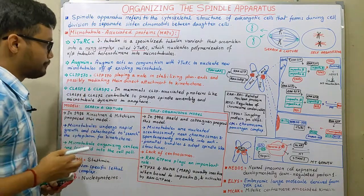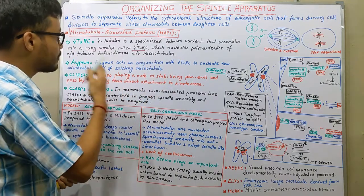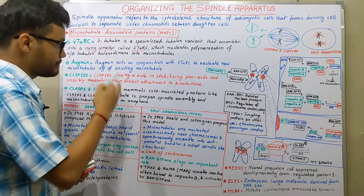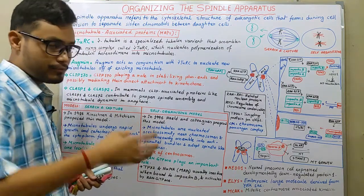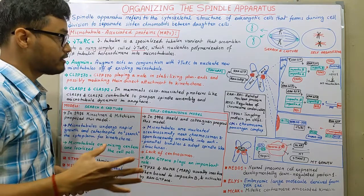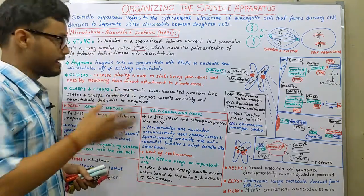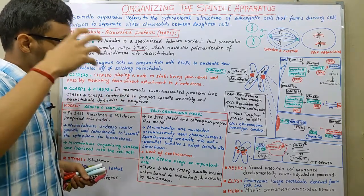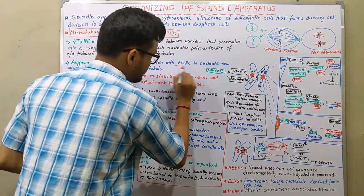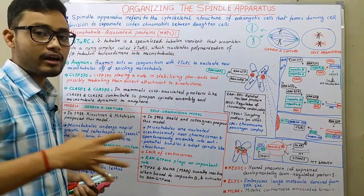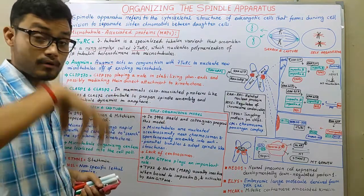The next one is augmin. Augmin acts in conjunction with gamma-TuRC to nucleate new microtubules off of existing microtubules. When a particular microtubule is formed from a pre-existing one, augmin comes into play — augmin joins with gamma-TuRC and nucleates a new microtubule which originates from the existing ones.